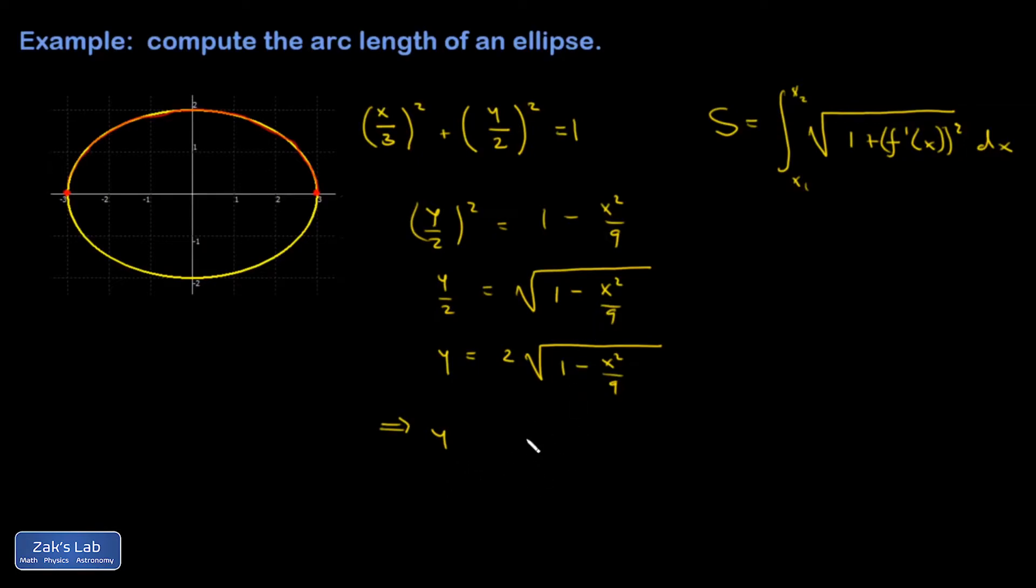So I have y prime is 2. And then the derivative of this, it's the quantity 1 minus x squared over 9 to the 1 half. So the derivative is 1 half, 1 minus x squared over 9 to the negative 1 half. And the chain rule says you've got to tack on the derivative of this interior function, which is negative 2 over 9 times x.